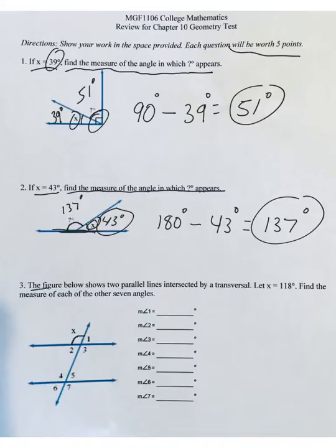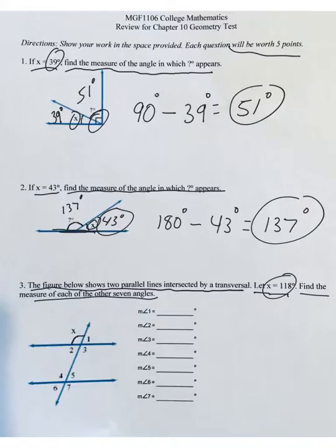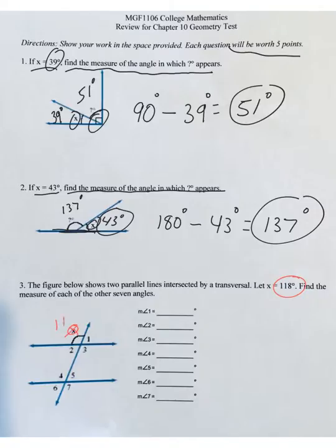Question 3: The figure shows two parallel lines intersected by a transversal. Let X equal 118 degrees. Find the measure of each of the other seven angles. I'll fill in what's given in the picture — X is 118 degrees. Since opposite angles are the same measure, which we call vertical angles in geometry, angle 3, directly across from X, must also be 118 degrees.